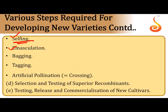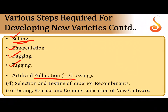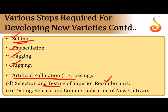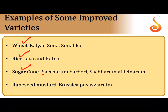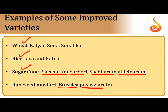For bisexual flowers, emasculation removes the anther, bagging is done, and pollen of the desired male parent is dusted onto the stigma of the female parent, followed by tagging. The recombinant seeds are grown, those expressing desirable characters are selected, tested repeatedly, released in different states and districts for uniform expression, and then commercialized. Examples of improved varieties: wheat — Kalyan Sona and Sonalika; rice — Jaya and Ratna; sugarcane — Saccharum barberi and Saccharum officinarum.